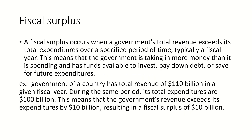A fiscal surplus occurs when a government's total revenue exceeds its total expenditures over a specific period of time, typically a fiscal year. This means that the government is taking in more money than it is spending and has funds available to invest, pay down debt, or save for future expenditures.